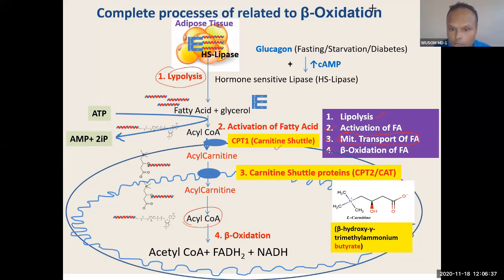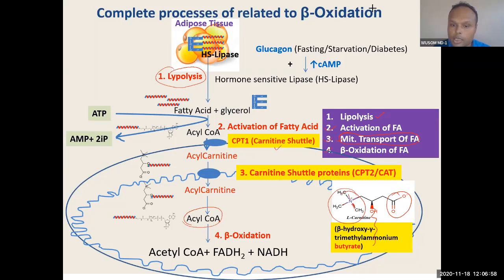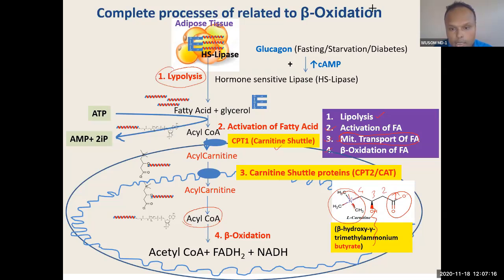Carnitine is a four-carbon compound. Through its OH group, the fatty acid binds to it. It has a quaternary amine — when four carbons are attached to one amine, it is called quaternary amine. So Carnitine is a quaternary amine and is basically hydroxybutyric acid — a four-carbon compound in a straight chain with three methyl groups on the nitrogen. If you remember butyric acid, you will memorize Carnitine.